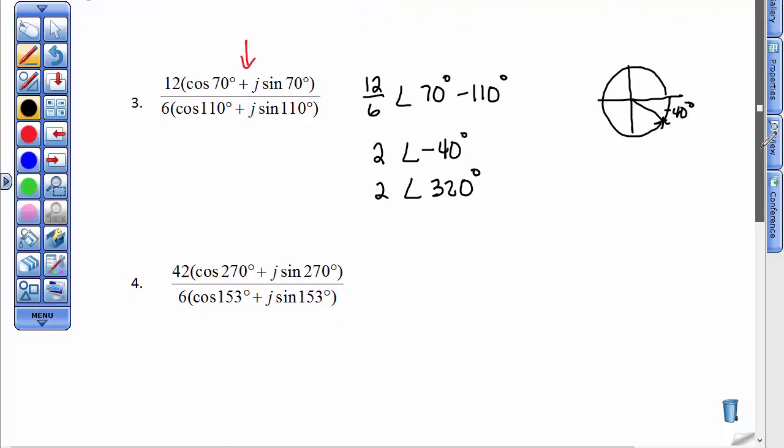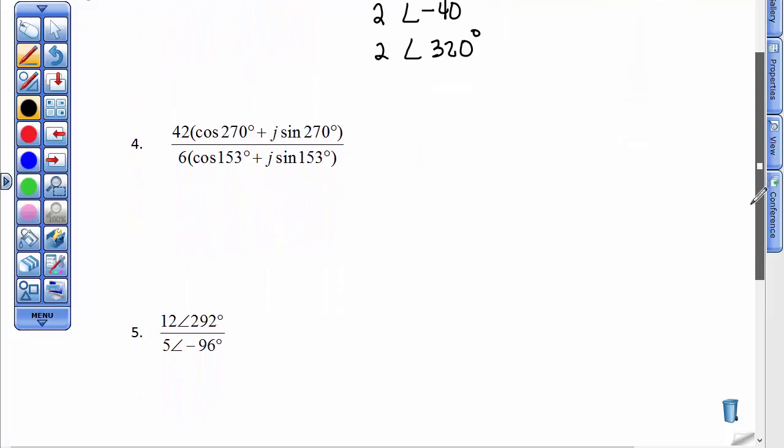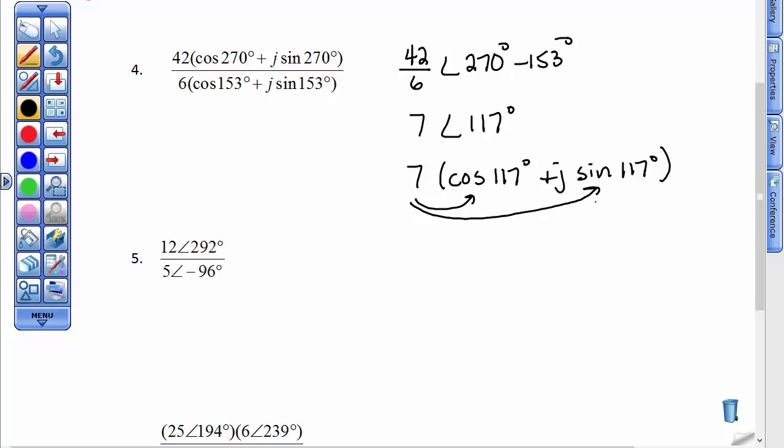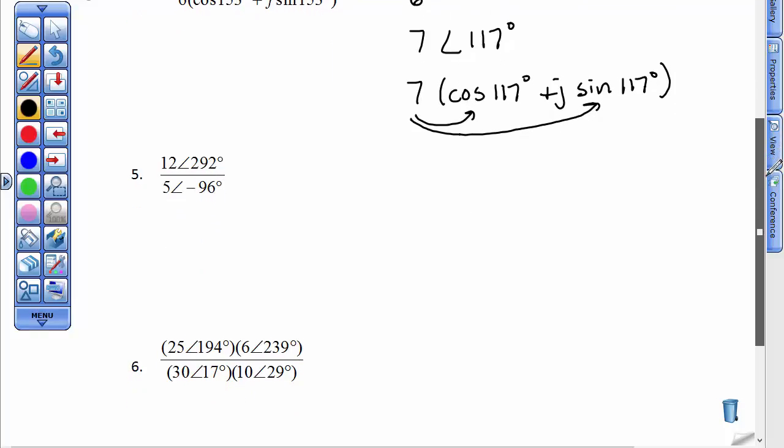Stop the video, please, and do the next couple. Actually about 3. Okay, so number 4. 42 divided by 6 would be 7, and then you just take 270° and subtract 153°. So again, 7, and then our angle would be 117°. Please don't forget, this means 7 times the cosine of 117° plus j times the sine of 117°. If you needed that in rectangular form, you could just get your calculator out and multiply 7 times the cosine of 117° and 7 times the sine of 117° if you needed it in rectangular form.